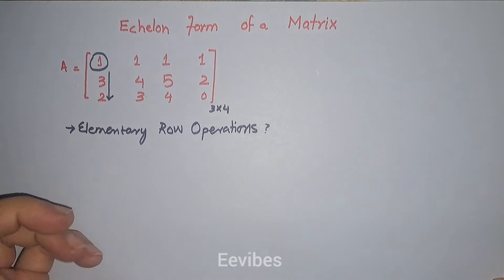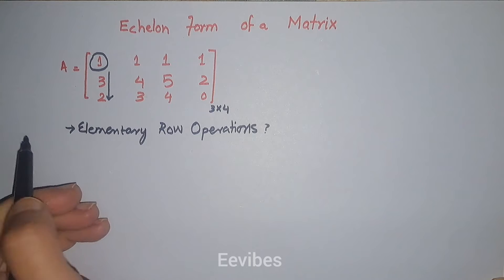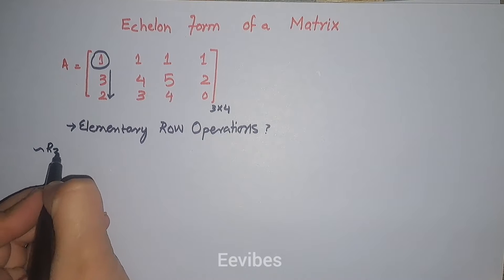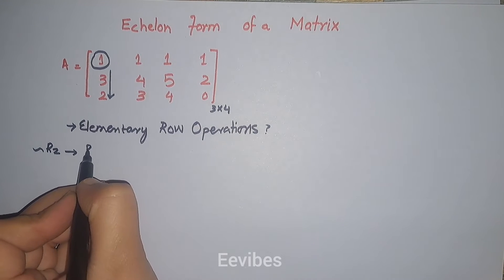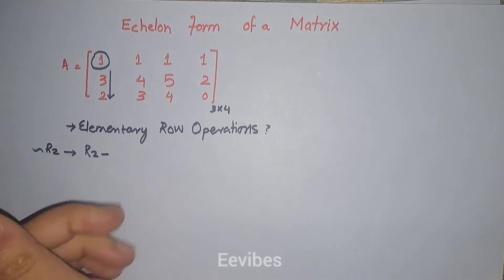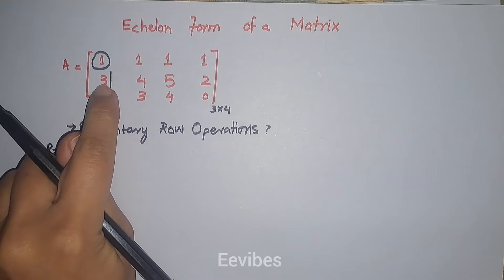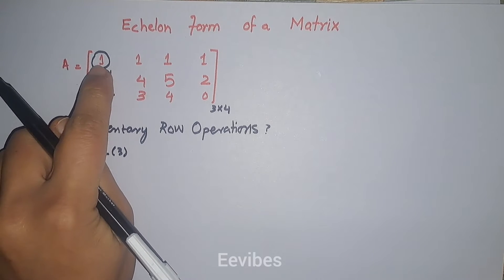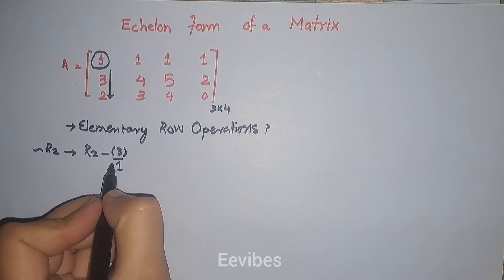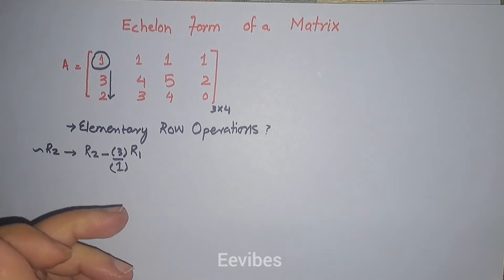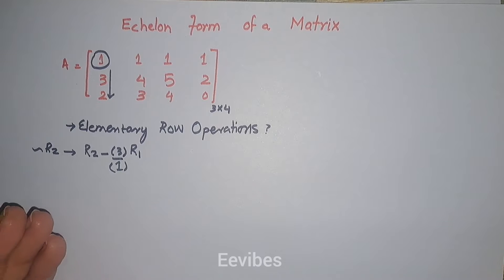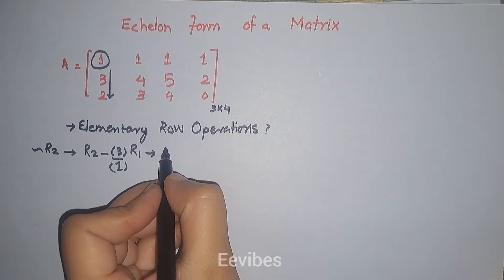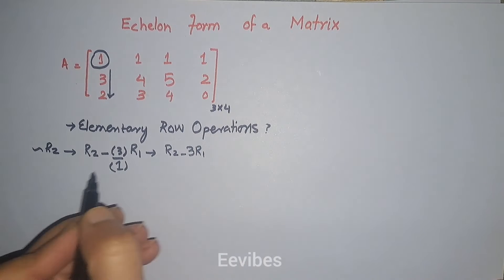Considering the rows as R1, R2, and R3, we need to make changes in R2 and R3. The change in R2 is obtained by the operation: R2 minus the entry we want to make zero, divided by the pivot value. The pivot value in this case is one, and that's why a pivot value of one makes elementary row operations much easier and quicker. This simplifies to R2 minus three times R1.